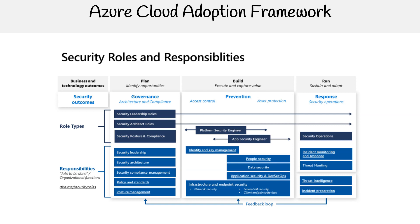Role types include: security leadership, which provides security direction and strategy; security architect, who designs and implements security blueprints; platform and app security engineers, who ensure security of platforms and applications; and security operations, which manages real-time security threats.